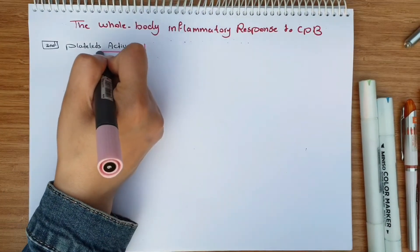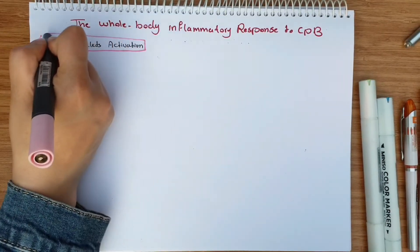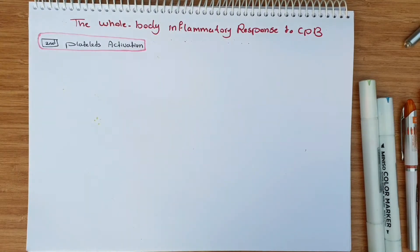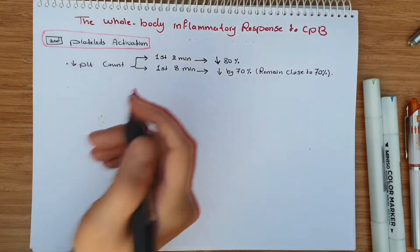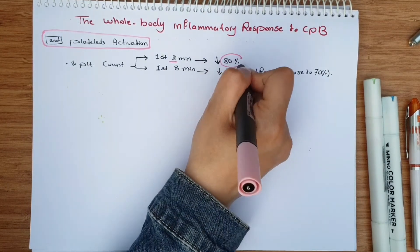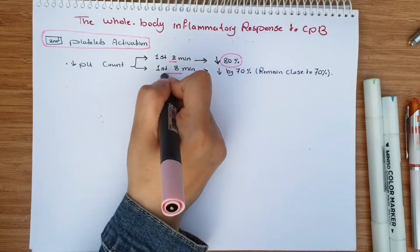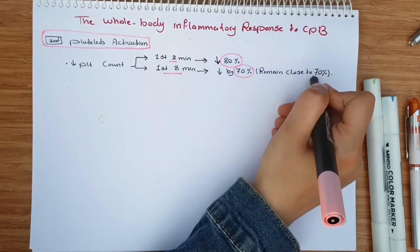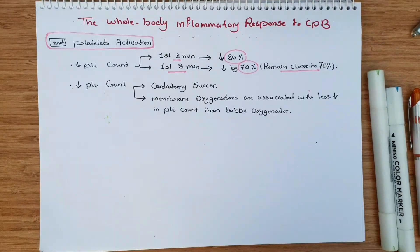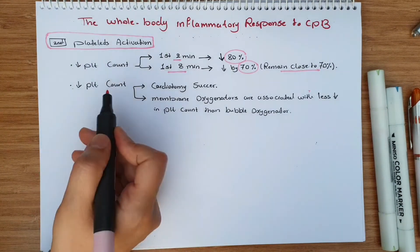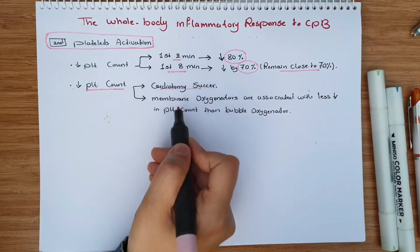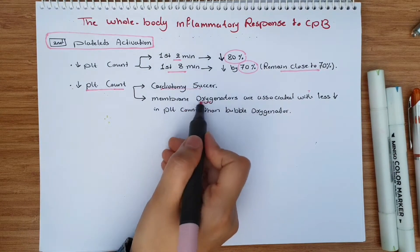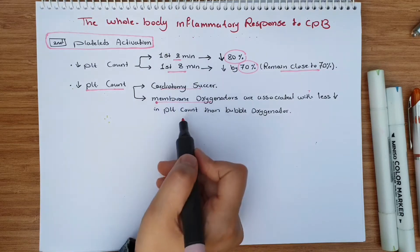Then we have platelet activation. After starting circulation, there will be a decrease in platelet count — by 80% in the first two minutes and by 70% in the first minute — and it stays close to that level. The factors that lead to this are hemodilution, the cardiotomy sucker, and the oxygenators. Interestingly, membrane oxygenators cause a greater decrease in platelet count than bubble oxygenators.